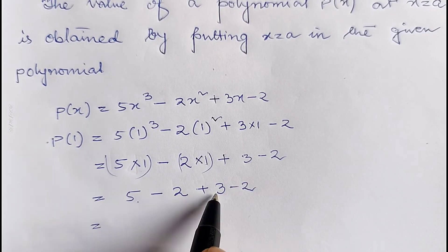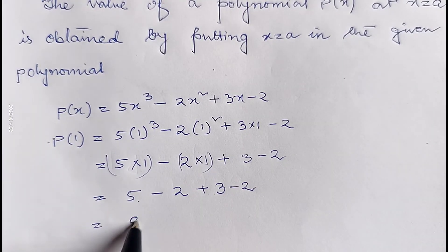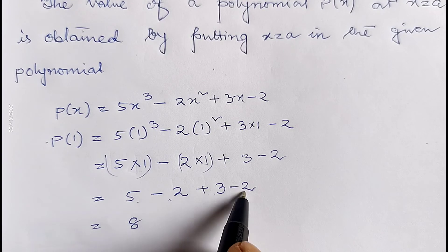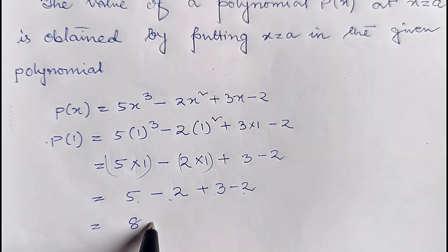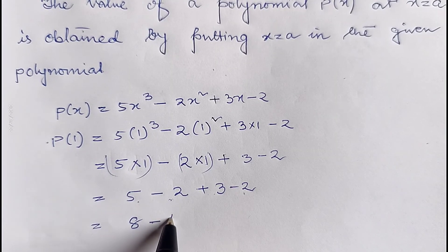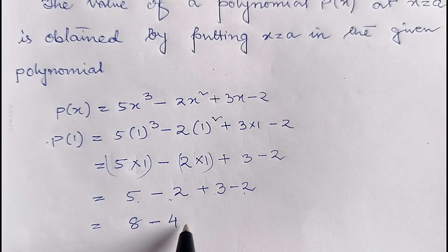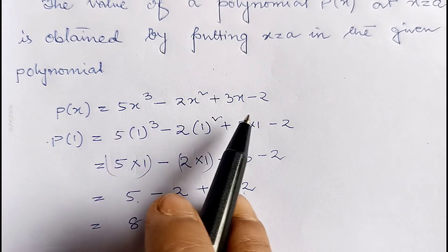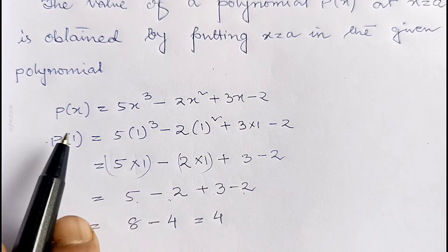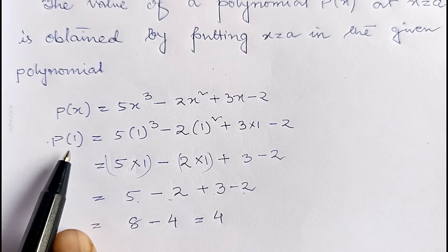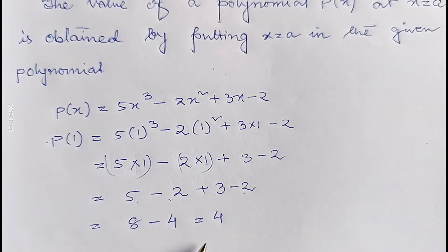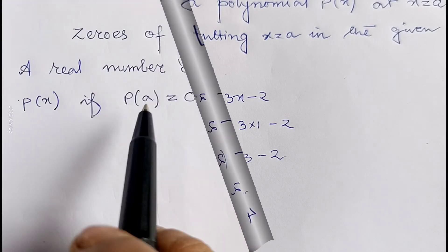So 5 into 1 is 5, minus 2 into 1 is 2, plus 3, minus 2. That gives us 5 plus 3 is 8, minus 2 minus 2 is minus 4, so 8 minus 4 equals 4. Therefore the value of this polynomial when x equal to 1 is 4. I hope this is clear.